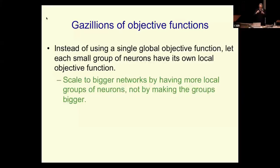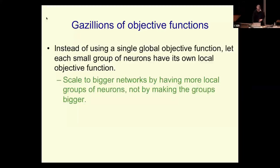That works — it doesn't work as well as backpropagation, but it does scale up much better to larger nets made with lots of local groups. So the question is: where do you get these local objective functions?